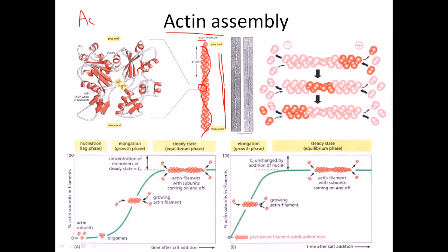In between the alpha helices and beta sheets, we find the ATP binding site, which is very important. An actin protein bound to ATP is very active, while one bound to ADP is not as active. This drives actin filament formation — when actin protein is bound to ATP, it is strongly driven to attach to another actin to make a polymer. When ATP is hydrolyzed to ADP, the actin protein becomes unstable and dissociates.